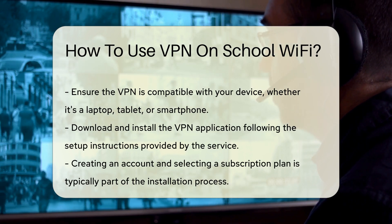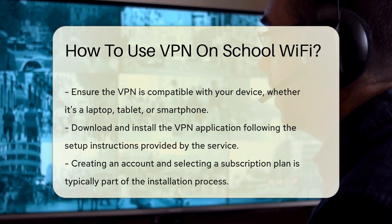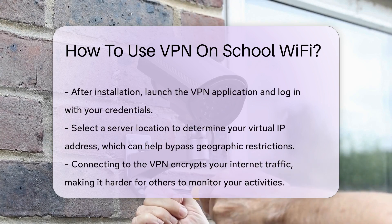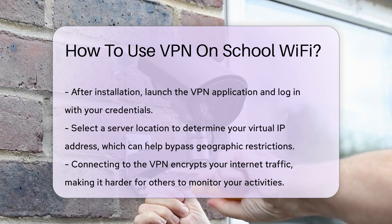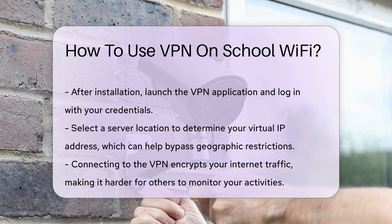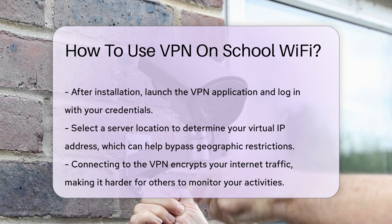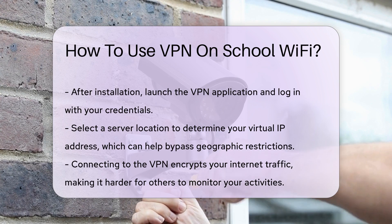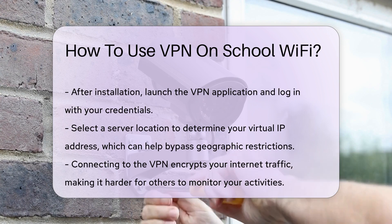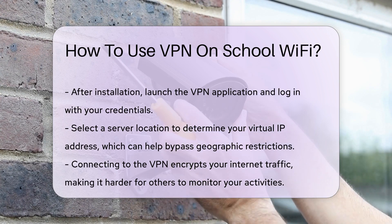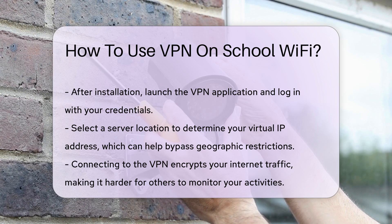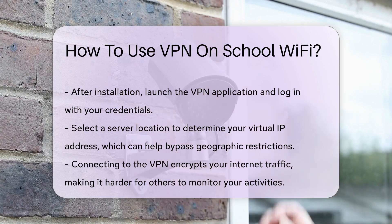After installation, launch the VPN application. You may need to log in using your credentials. Once logged in, select a server location. This will determine your virtual IP address and can help bypass geographic restrictions. Connect to the VPN — your internet traffic is now encrypted, making it difficult for anyone on the network to monitor your online activities.